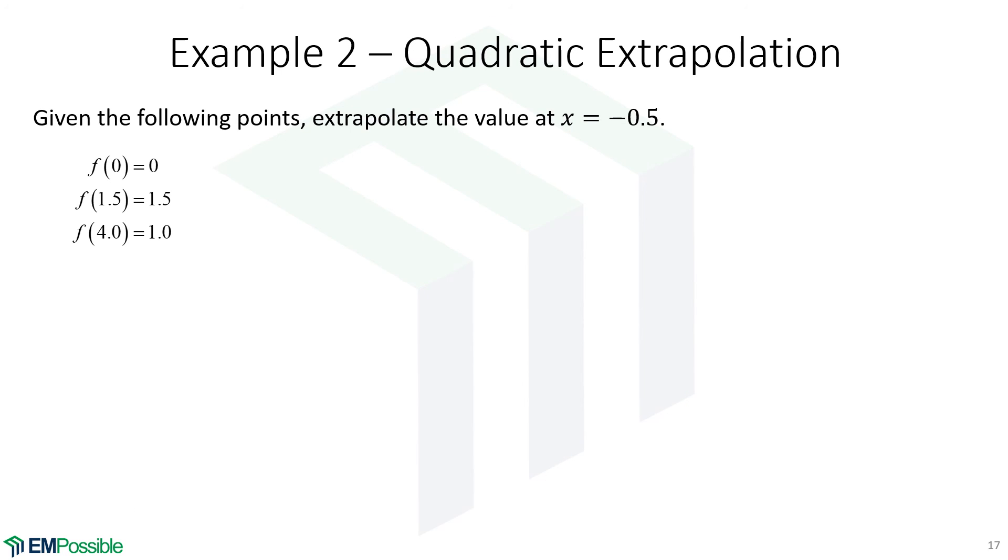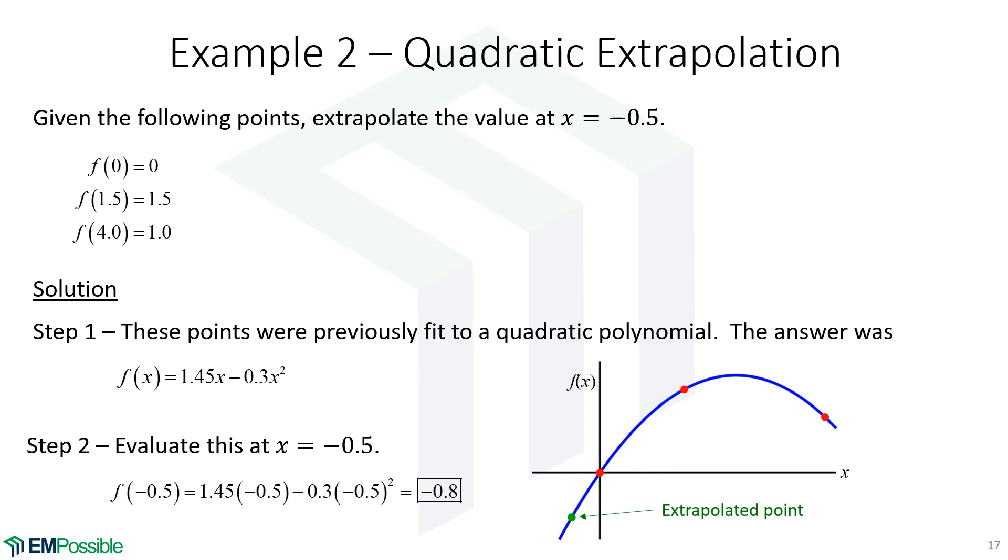Suppose we would like to extrapolate a point. The process is exactly the same. In fact, the algorithm doesn't know or care whether we're doing interpolation or extrapolation. We are fitting a polynomial to a bunch of points and then using that to calculate at a new value of X. So we have X equals minus 0.5. This falls outside of our range of 0 to 4, so that is extrapolation. We've already fit that to a polynomial. We will reuse those results. We simply plug in a value of minus 0.5, and we get a function value of minus 0.8. And if we plot that, that's right here, and it sure does fall exactly on this polynomial. And we are extrapolating because it falls outside.